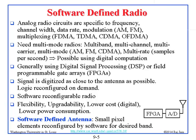Two important parallel developments happened in technology. One is software-defined radio, or SDR. The problem with analog radio is that it is specific to a frequency, and the channel width, data rate, modulation, multiplexing — everything is fixed in hardware. For example, an FDMA system cannot be used in a TDMA world. So people asked: why not digitize everything? Nowadays we need multi-mode radios that can work on multiple bands, multiple channels, multiple carriers, multiple modes, and multiple rates — and all of this is possible with digital computation.